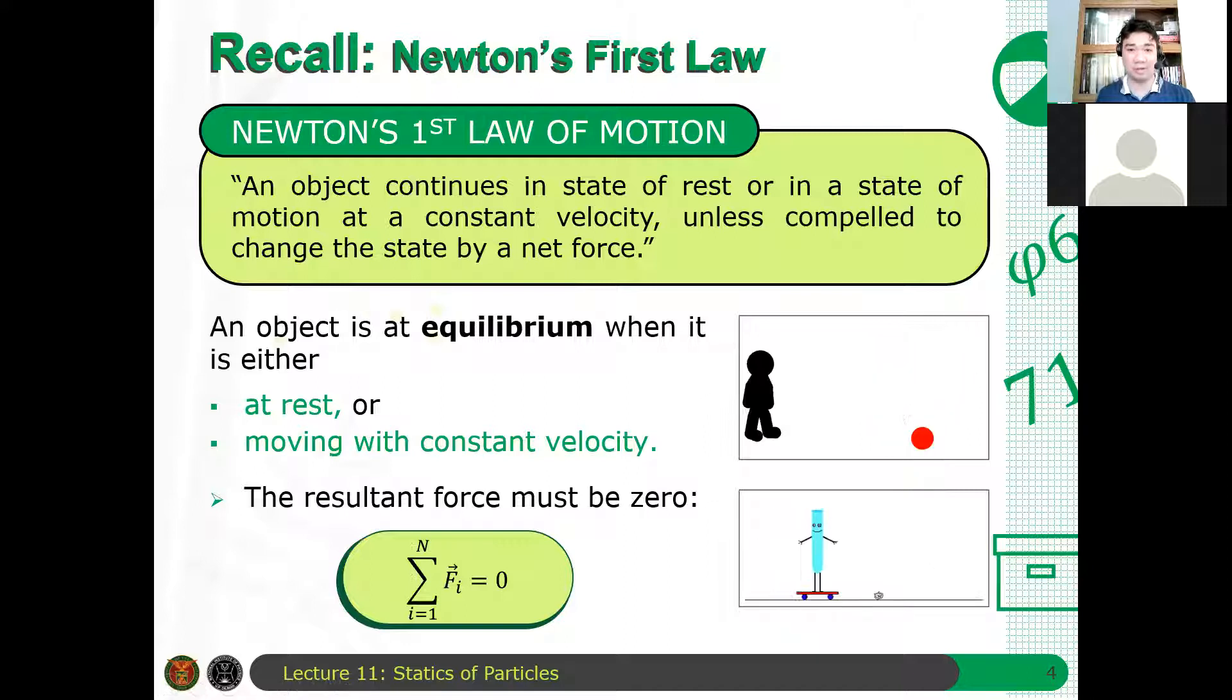Let's have a review of our first law. Newton's first law of motion states that an object continues in state of rest or in state of motion at a constant velocity unless compelled to change the state by a net force.